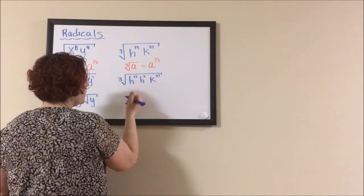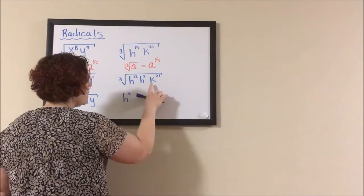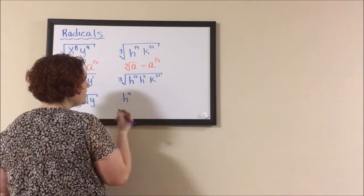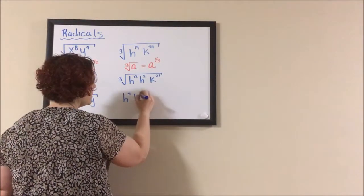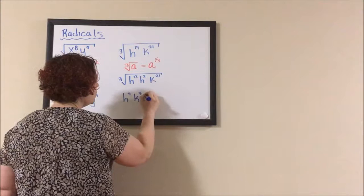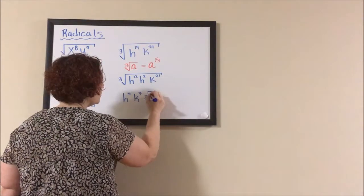12 divided by three is four, h to the fourth. 21 divided by three is seven, k to the seventh. And that two stays under a cube root.